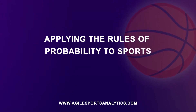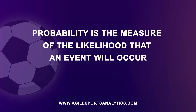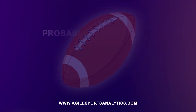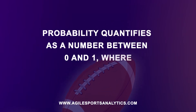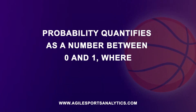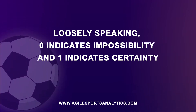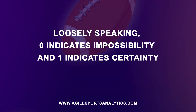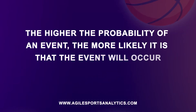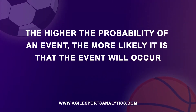Applying the Rules of Probability to Sports. Probability is the measure of the likelihood that an event will occur. Probability quantifies as a number between zero and one, where zero indicates impossibility and one indicates certainty. The higher the probability of an event, the more likely it is that the event will occur.